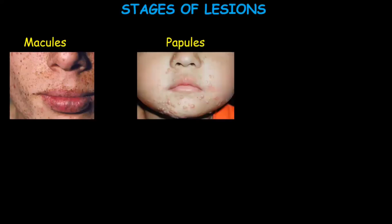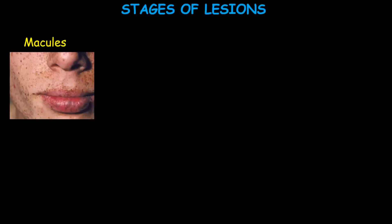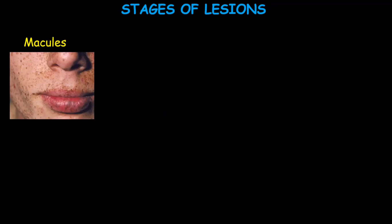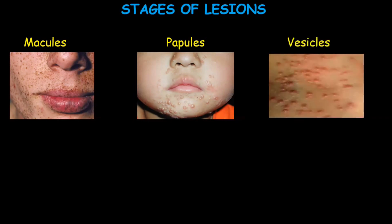The stages of lesions are: macules, papules, vesicles, pustules, and scabs. Macules are flat lesions less than 1 cm in size, identifiable by looking at and touching them. Papules are small well-defined bumps in the skin which are rounded, pointed, flat, or may have a dip. A vesicle or blister is a thin-walled sac filled with fluid, usually clear and small.